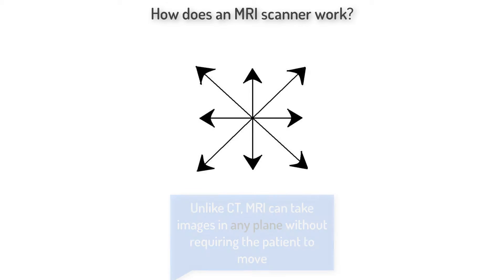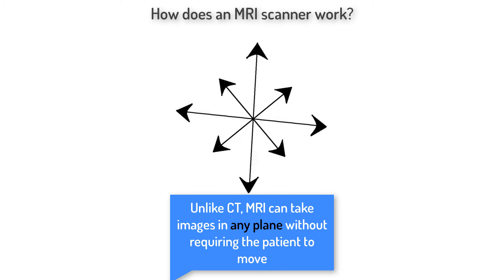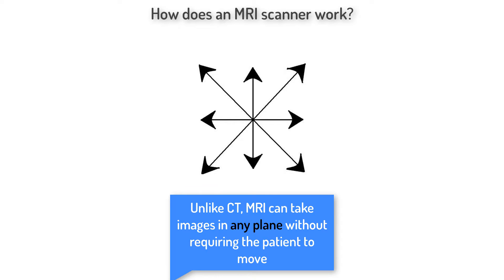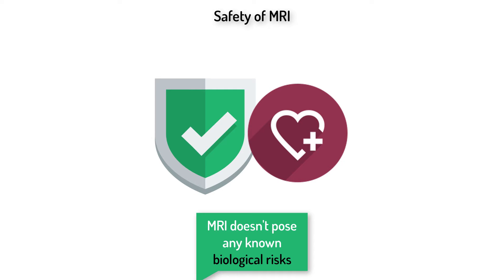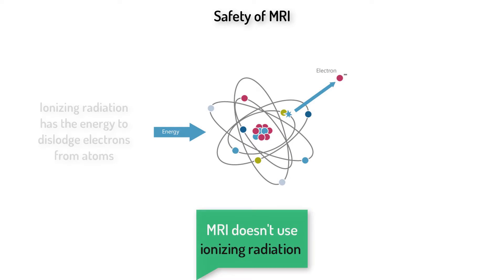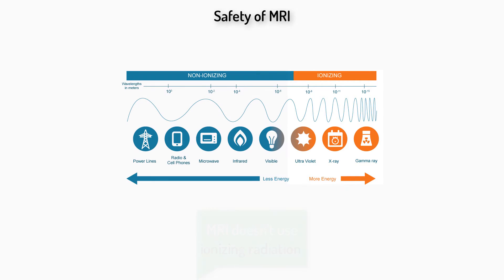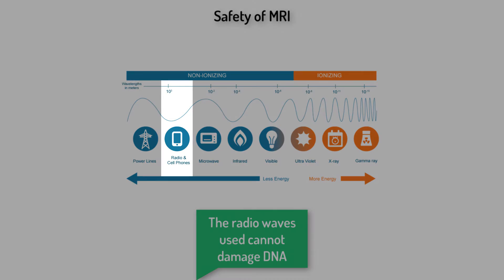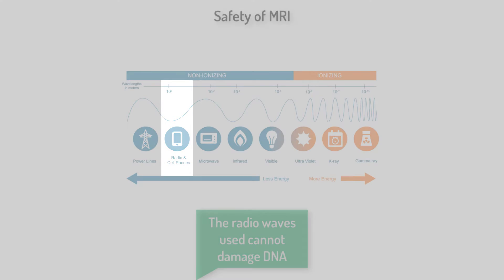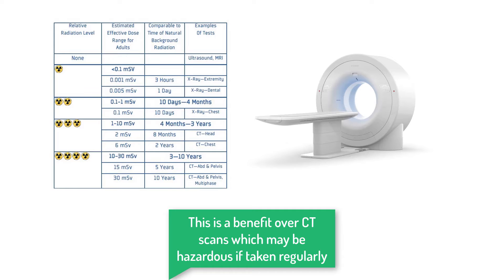Furthermore, an MRI scanner can image areas of the body in any direction, enabling the creation of three-dimensional images which may be analyzed from different angles. There are no known biological risks associated with MRI technology as body chemistry returns to normal after a scan. Additionally, a major benefit of MRI over technologies such as CT and x-ray is the lack of ionizing radiation. The radio frequencies used in MRI do not cause any adverse effects, whereas ionizing radiation emitted by CT scanners has the potential to damage DNA.